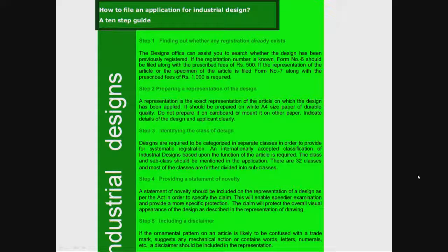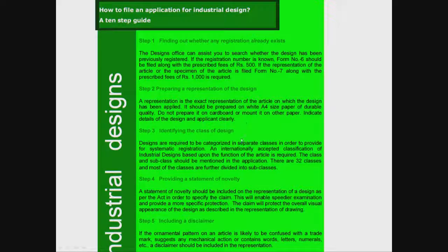Industrial design as defined by our patent office is about anything you can file and claim as a different thing. Any physical occurrence of an object is considered a new industrial design. It is not about industrial design as a service or as a philosophy. A representation is an exact depiction of the article on which the design has been applied.